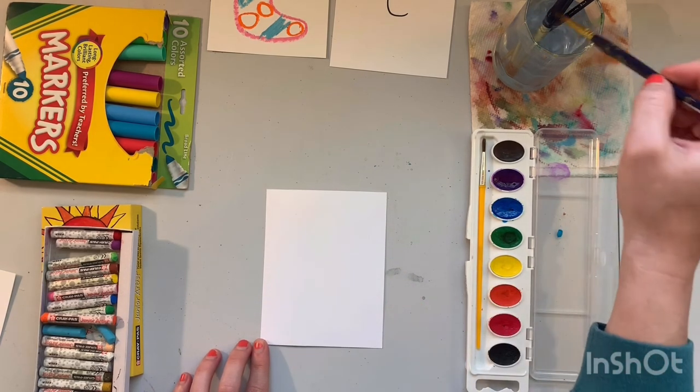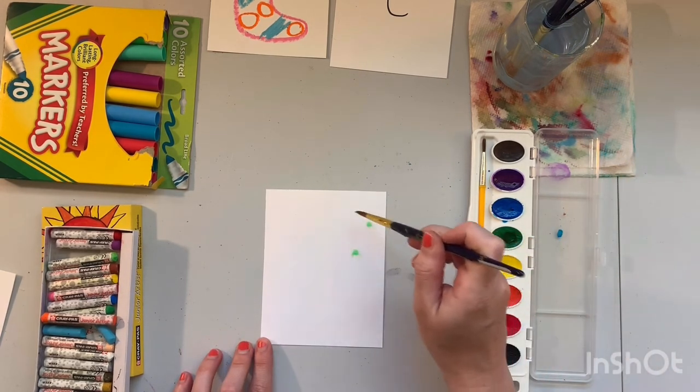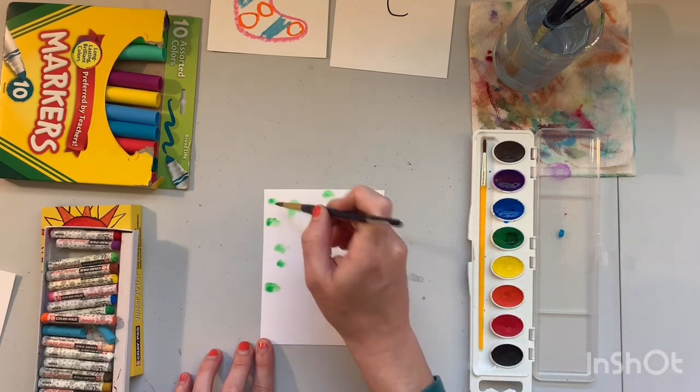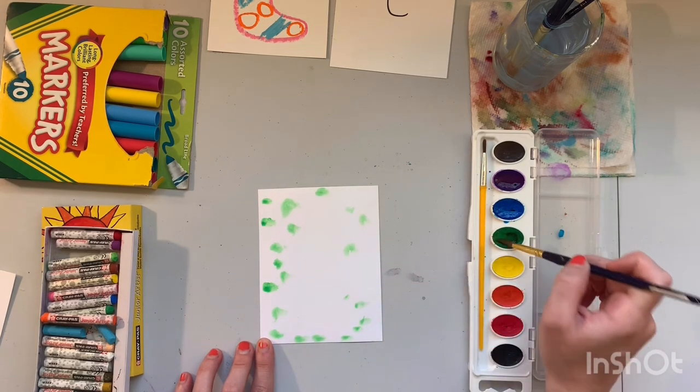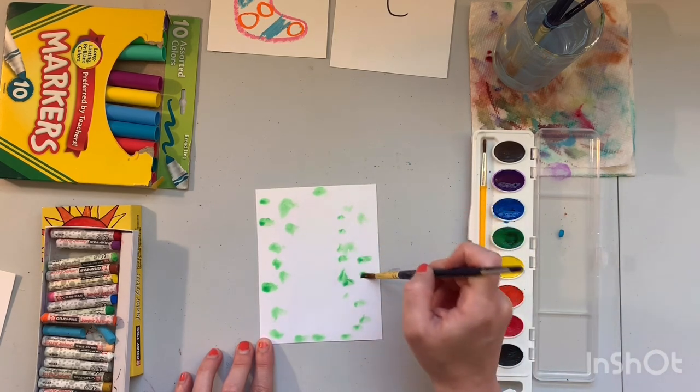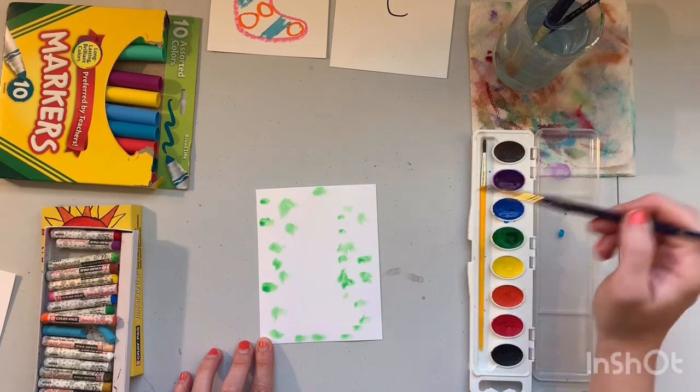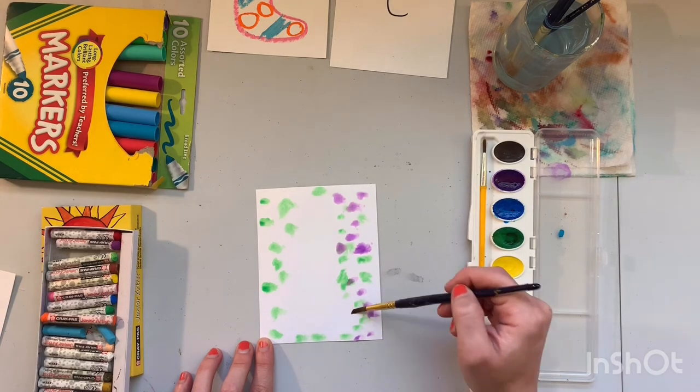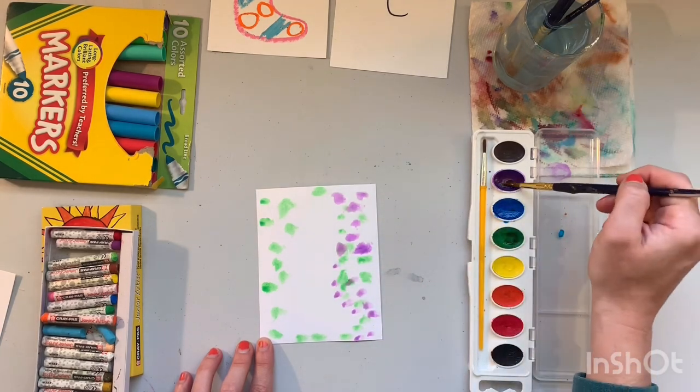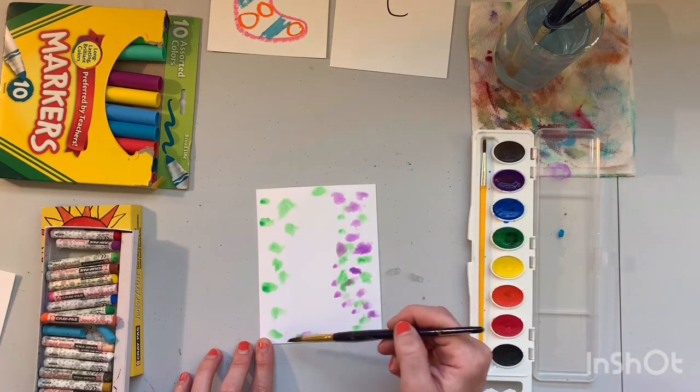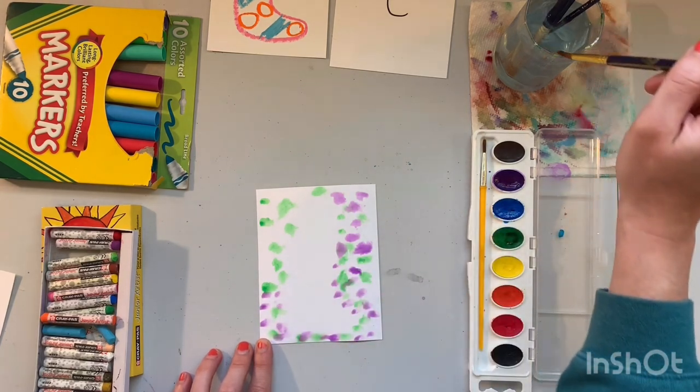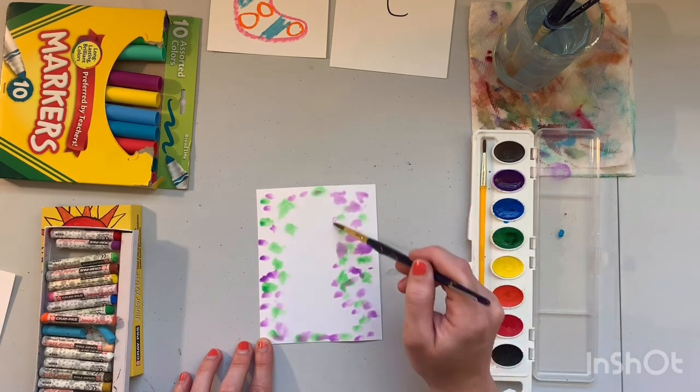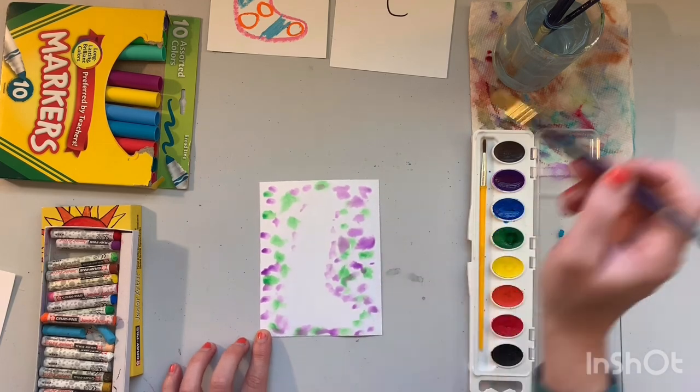Alright, so now I'm going to get my brush wet and start using some colors and I'm just going to polka dot them on top of the water around my shape. Another color. This works best if you use colors that are kind of close to each other. So the warm colors, you guys should know what the warm colors are. Remember those are red, orange, and yellow. Those go good together. And the cool colors, which are purple, blue, and green, those go really good together when you do this too.